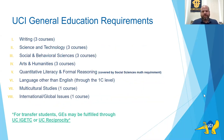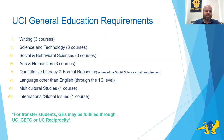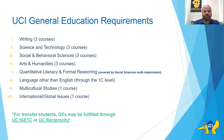UCI has eight general education categories. Category 1 is writing: two lower-division and one upper-division writing course. Category 2 is science and technology: three courses such as chemistry, physics, biosci, or earth system science. Category 3 is social and behavioral sciences — three courses — but if you stay as a major in the School of Social Sciences, this is automatically satisfied. Category 4 is arts and humanities, also three classes, such as African-American studies, philosophy, art history, or history. Category 5 is quantitative literacy and formal reasoning, which is covered by the School of Social Sciences math requirement.